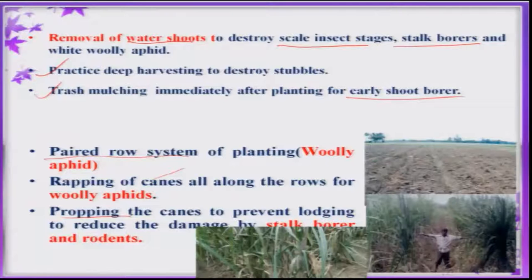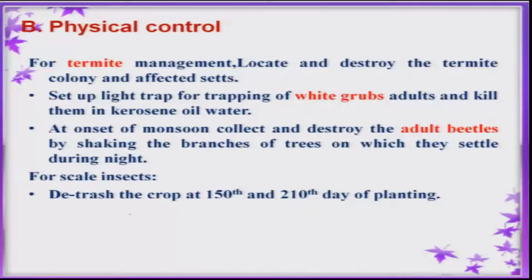Propping of canes helps prevent lodging due to stalk borers and sometimes also prevents attack from rodents. There are a few physical control practices that can be adapted in the sugarcane ecosystem. For termite management, first locate the termitaria and destroy the queen, then set up light traps for attraction of white grubs at early season, to collect and kill them. Adults can also be collected from neem trees during early season of the crop.